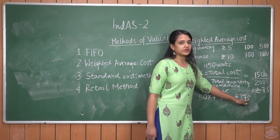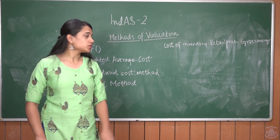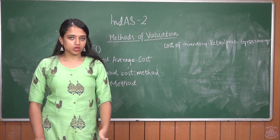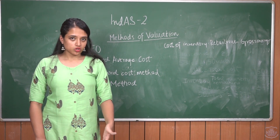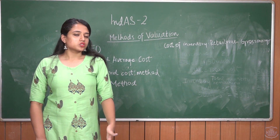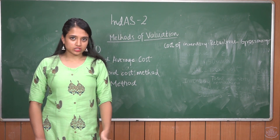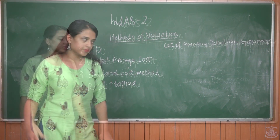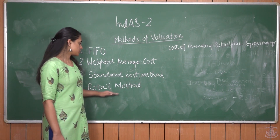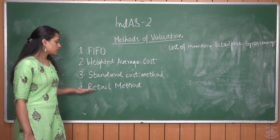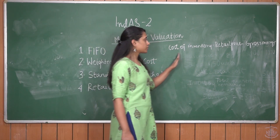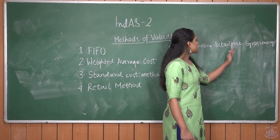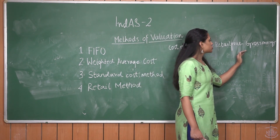The third method of inventory valuation is the standard cost method. Standard cost refers to an estimated or predetermined cost of performing an operation or deciding the cost of a manufactured good. It is often used as a target cost against actual cost, and standard costs are developed over time using historical data. The fourth method is the retail method, which is a technique for arriving at the cost of inventory at a period end. The cost of inventory is found by taking the retail price of inventory minus the gross margin, which gives the closing value of inventory.